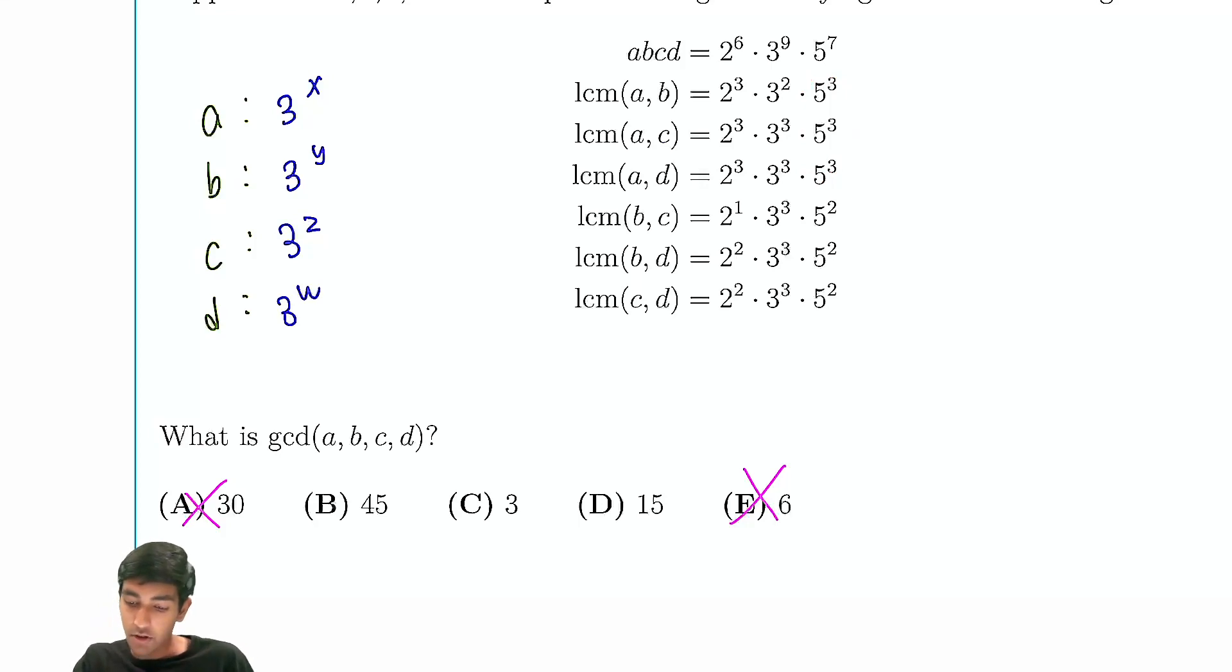5 is very similar to 2. LCM AB is 5 cubed, AC is 5 cubed, AD is 5 cubed. So, either A has a factor of 5 cubed, or B, C, and D all have factors of 5 cubed. But, if B, C, and D all have a factor of 5 cubed, then B and this thing will have a factor of 5 cubed, which it isn't. So, therefore, A must have a factor of 5 cubed in it. So, this must be 3.